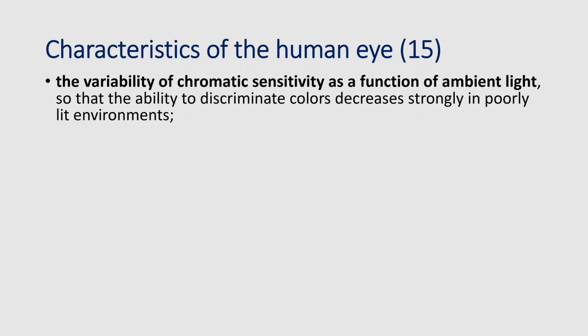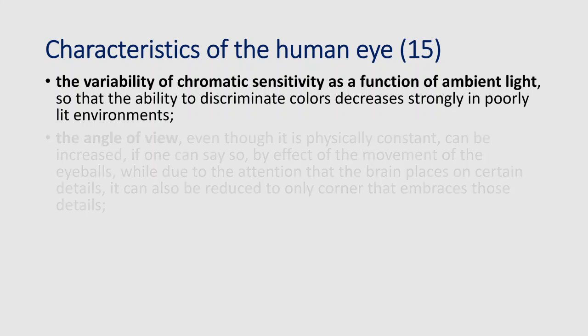Another limitation is the variability of chromatic sensitivity as a function of ambient light: the ability to discriminate colors decreases strongly in poor light environments. In darkness, we are not able to distinguish as many colors as during daytime. Our chromatic vision — the possibility to catch different colors — depends on the illumination condition.